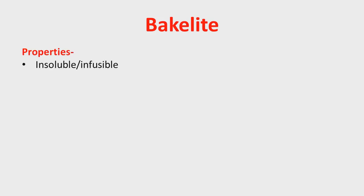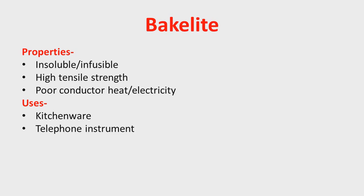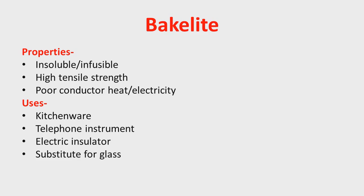Because of extensive crosslinking, Bakelite is insoluble and infusible in nature, and has high tensile strength. Bakelite is a poor conductor of heat and electricity, and is therefore used in making kitchenware and telephonic instruments. Because it is a bad conductor of electricity it is used as an electrical insulator. Bakelite is also a good substitute for glass.